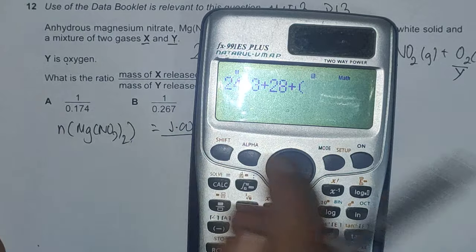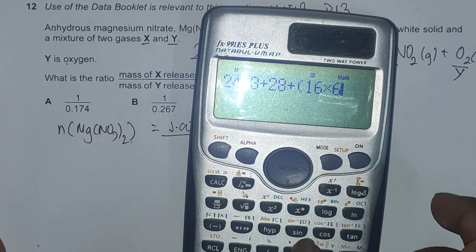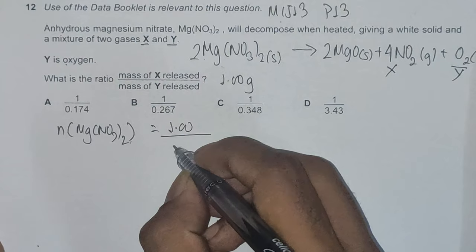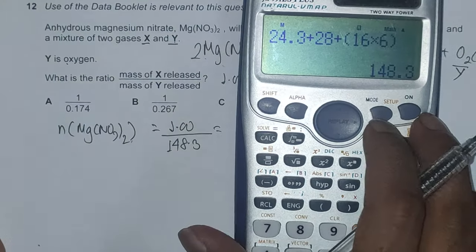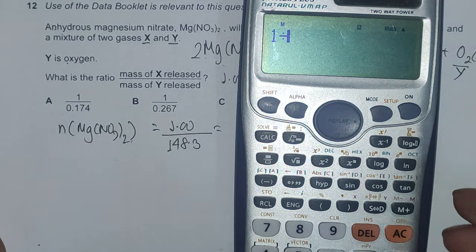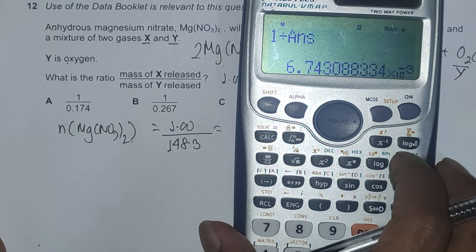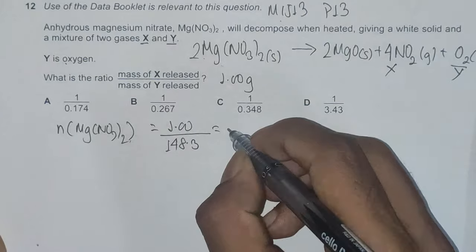MR of magnesium is 24.3 plus N2 means 14 multiplied by 2, and O6 is 16 multiplied by 6, which is 148.3. This gives us moles of magnesium nitrate as 1 divided by 148.3 as 6.74 × 10^-3.